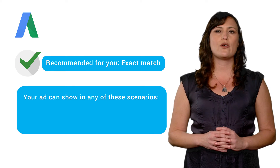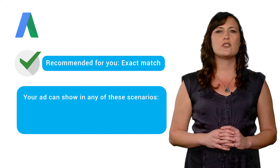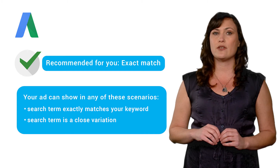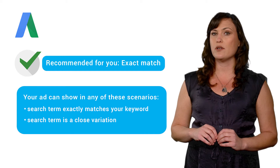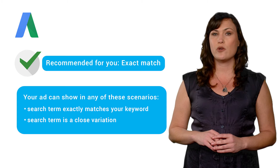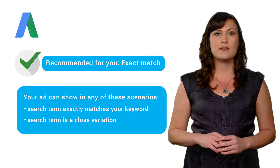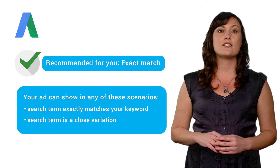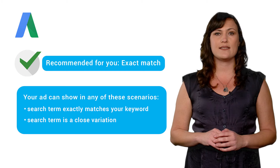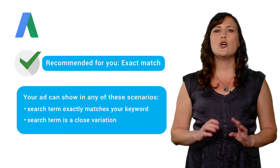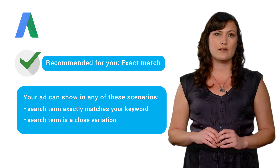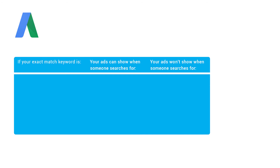We'll also show your ad when someone searches for your exact keyword or close variations of your exact match keyword, such as misspellings, singular and plural forms, acronyms, stemmings (such as floor and flooring), abbreviations, and accents. So there's no need to separately add close variations as keywords.